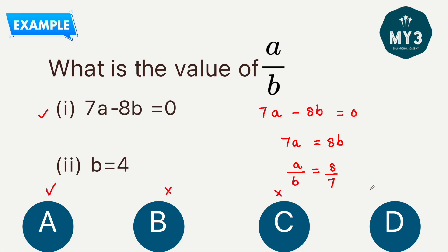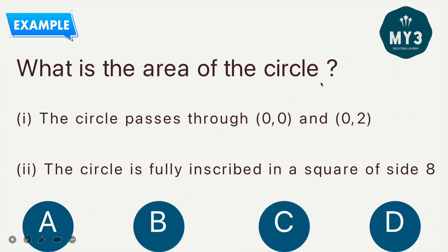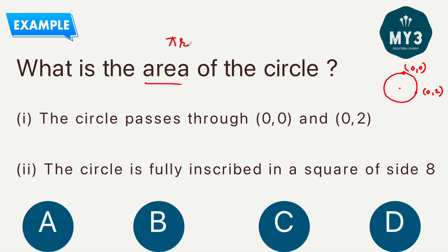Example 2: What is the area of the circle? Statement 1: The circle passes through (0, 0) and (0, 2). The area formula is πr², so we need the radius. Using only these two points, we cannot determine the radius — statement 1 is insufficient. Eliminate option A and look at statement 2 individually, without carrying over information from statement 1.